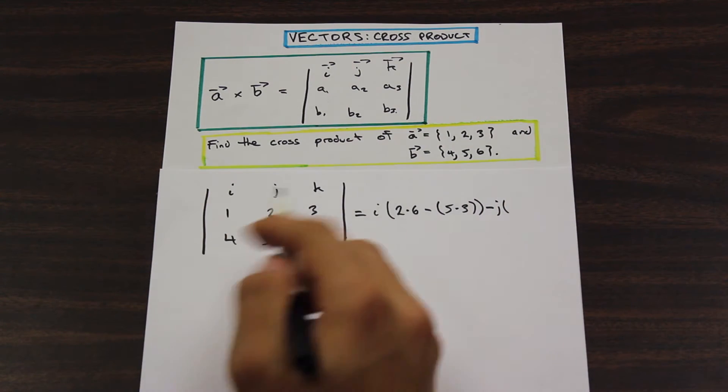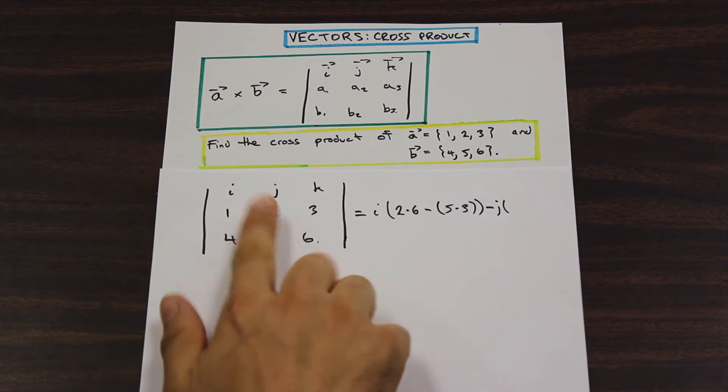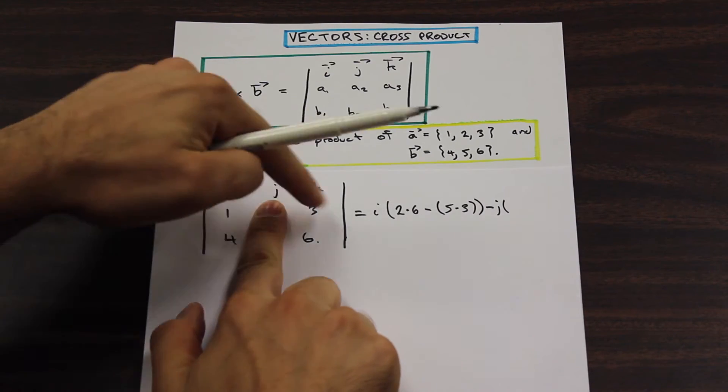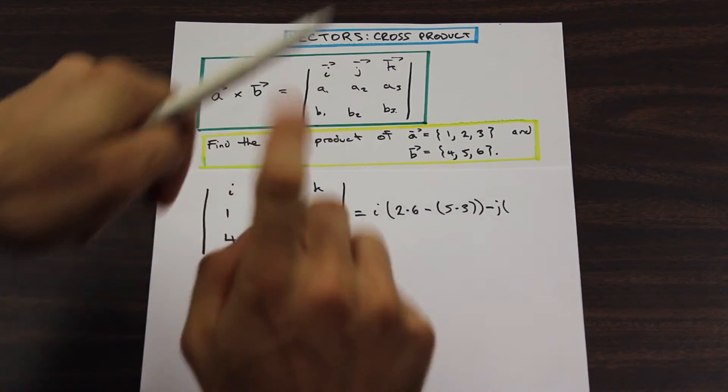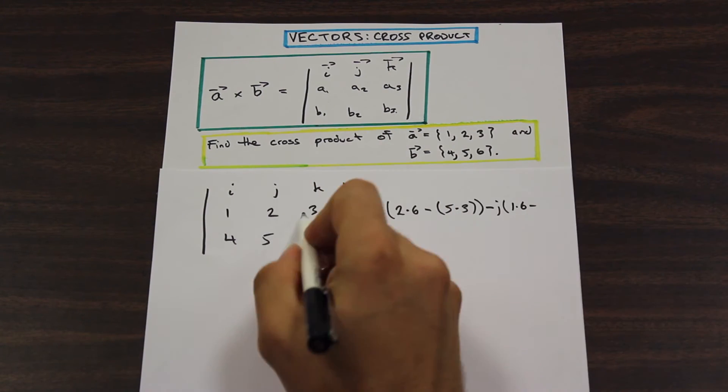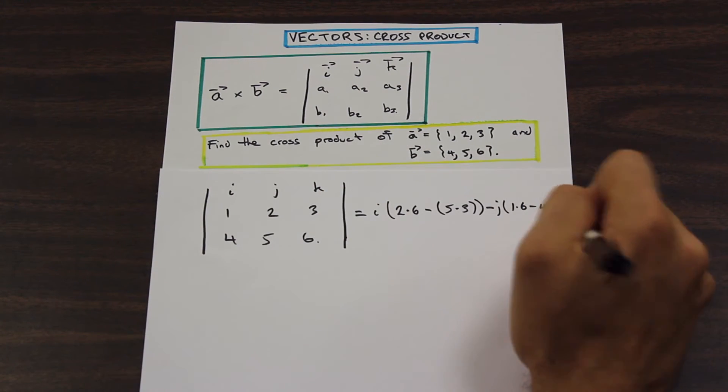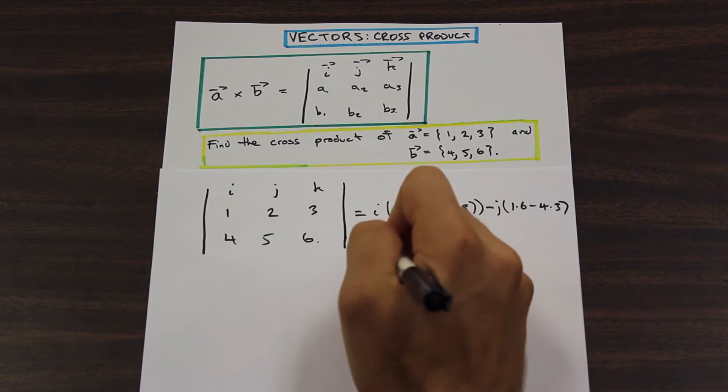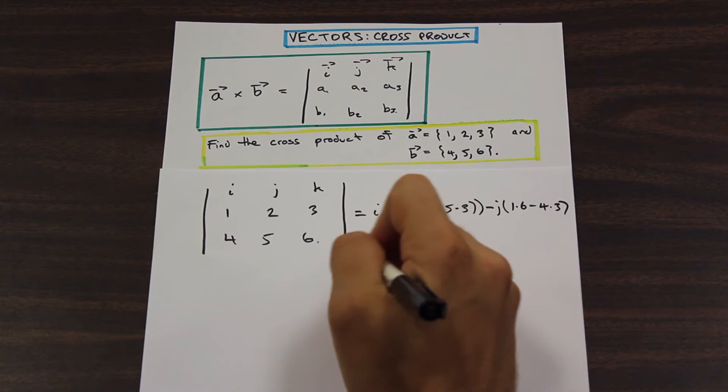So we have J, now we're going to eliminate the J column here, and we're going to deal with one, four, three, and six, so one times six minus four times three.